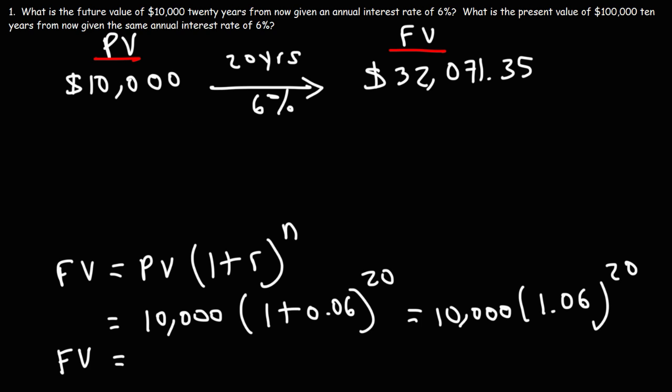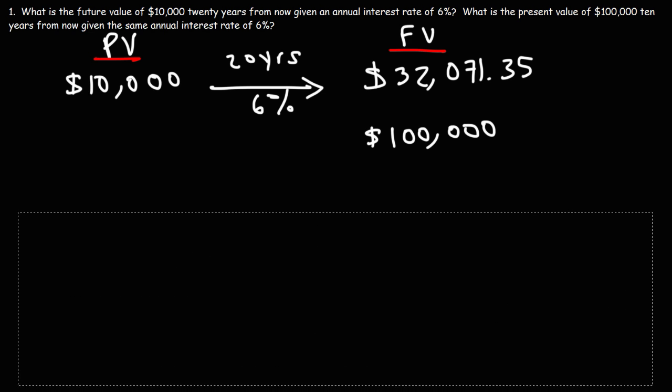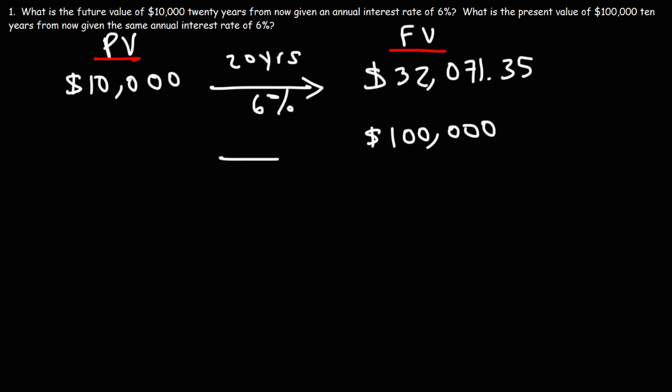So now let's move on to the second part of the problem. What is the present value of $100,000 10 years from now, given the same annual interest rate of 6%? So in the second part of the problem, we're given the future value, which is $100,000, and we want to calculate how much that is worth in the present. And the interest rate is the same.